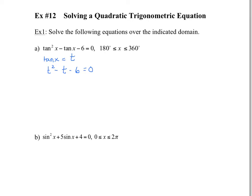So if we factor this, we'd have (t minus 3)(t plus 2) equals 0, and therefore you'd have t equals 3 and t equals negative 2. Well that's good, but don't forget we're not solving for t — we're solving for tanx, and we said tanx is equal to t.